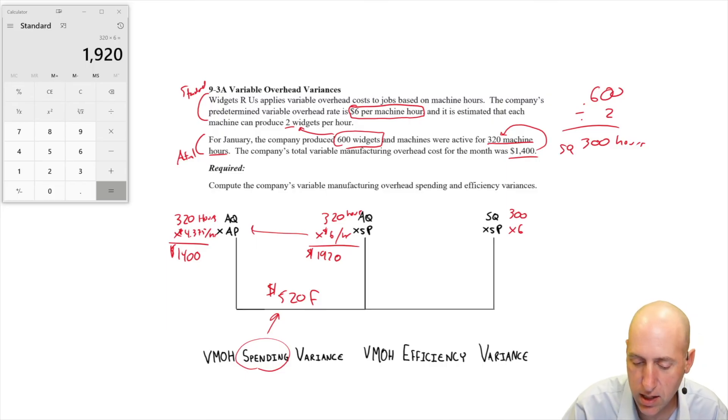Now I can see it took us 320 hours, so bad news on the horizon in terms of the favorable, unfavorable variances. 1800 to 1920, this is $120 and it is unfavorable. And why is it? Well, it took us 320 hours to do work that should have taken us 300 machine hours. So we were inefficient with the use of the machines. That's why the efficiency variance is unfavorable.